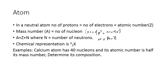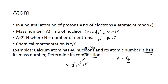The chemical representation of an atom is written as X with mass number A and atomic number Z. For example, if an atom has 40 nucleons, its mass number is 40, and its atomic number is half its mass number — so Z equals 40 over 2, which is 20. From the atomic number we find the number of protons and electrons, both equal to 20.